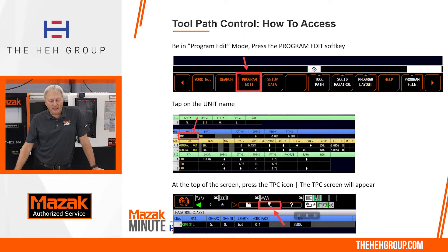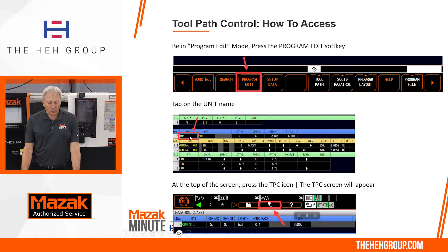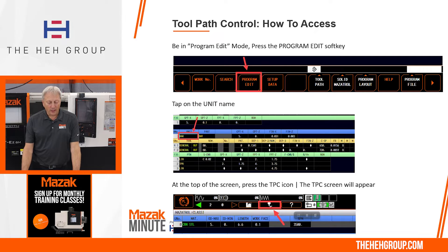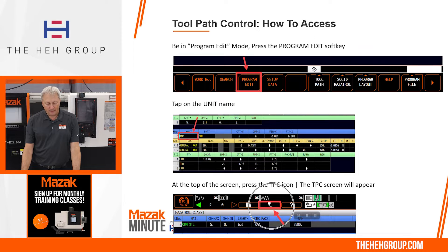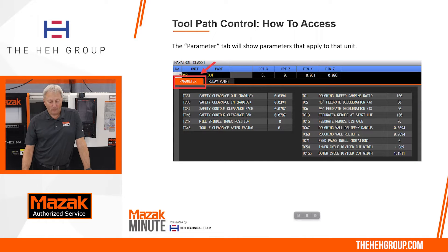To get to the TPC, first you're going to go down to the bottom of your soft keys and go to program edit. From there you're going to select the name of the unit — the middle picture shows you the bar. Then you're going to go to the top of your screen and next to your question mark is a tool with a line that shows path. Press that and it will open up the TPC window. The parameter tab will probably be displayed first and this parameter tab will show you what parameters are effective for that particular unit.